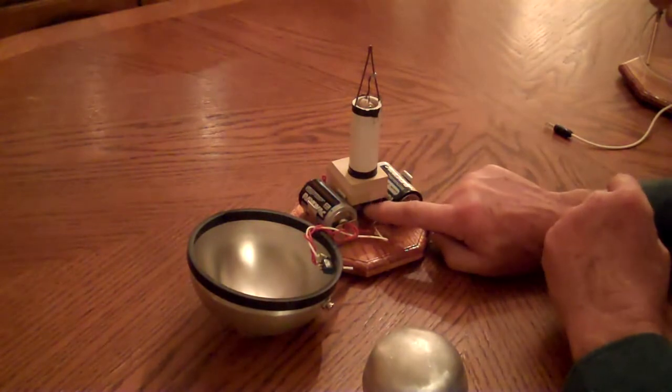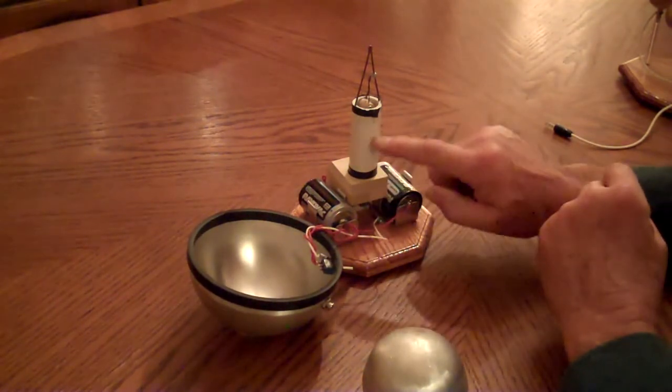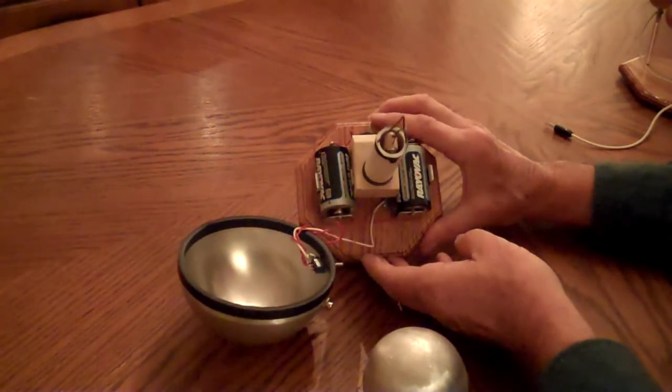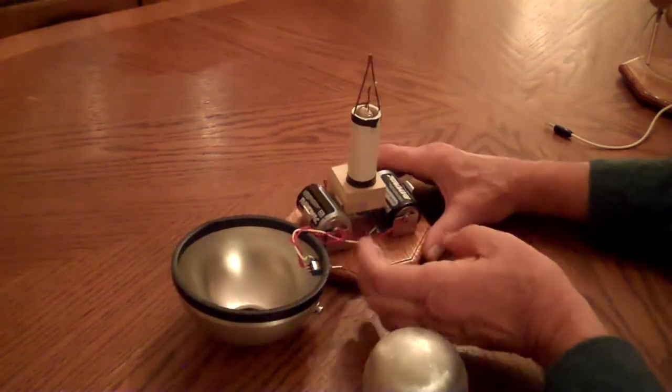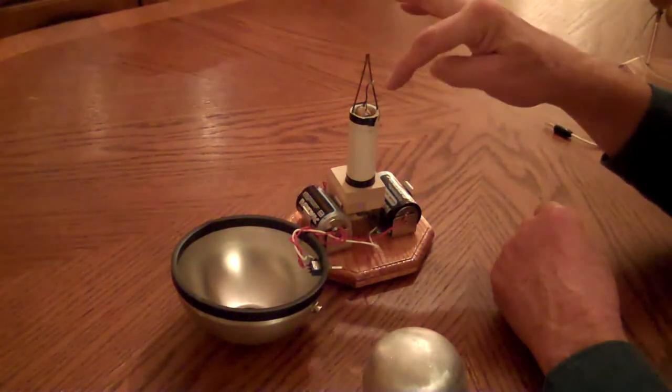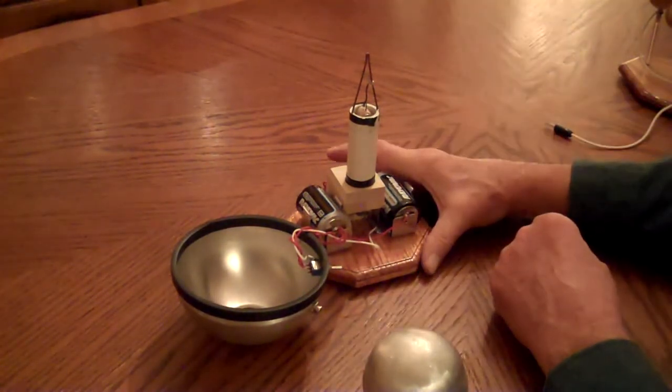And then it has a rubber band belt that goes up through this tube into an aluminum pulley on top. And then the brush assembly up here has a wire brush that takes the charge off of the belt.